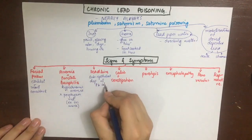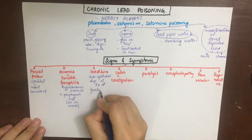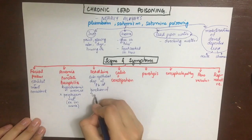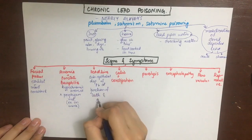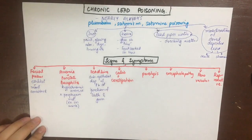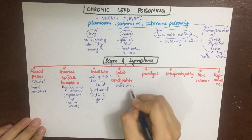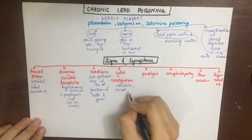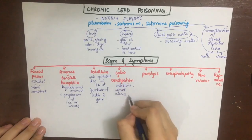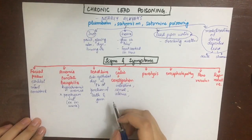There will be a bluish-black line due to sub-epithelial deposition of lead sulfide granules on the gums at the junction of the teeth and the gums.